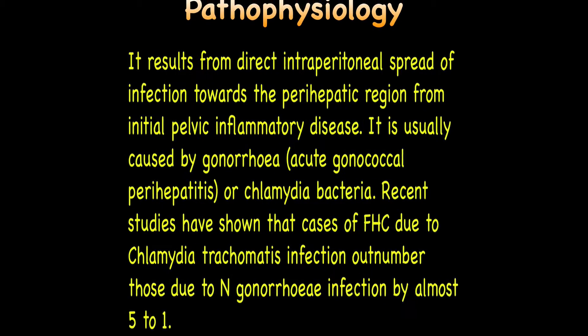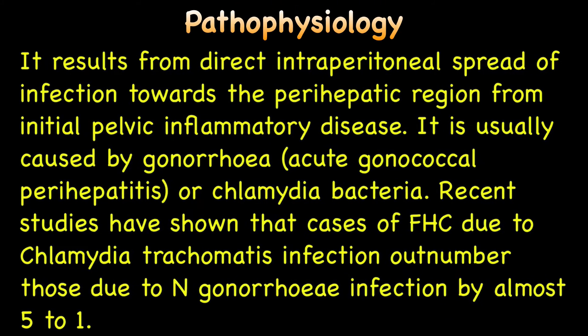The syndrome is thought to result from direct intraperitoneal spread of infection towards the perihepatic region from the initial pelvic inflammatory disease. It is usually caused by gonorrhea, acute gonococcal perihepatitis, or Chlamydia bacteria. Recent studies have shown that cases of Fitzhugh-Curtis Syndrome due to Chlamydia trachomatis infection outnumber those due to Neisseria gonorrhoeae infection by almost 5 to 1.